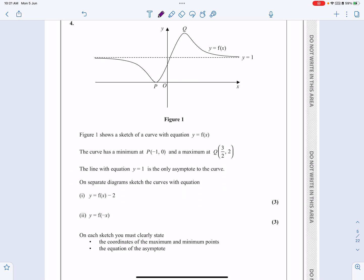We're going to be translating graphs and we're going to be using y equals f minus x in a moment, but let's just have a look at it. So it says figure 1 shows a sketch of the curve. We've got that there. It has a minimum point at minus 1, 0, and a maximum value at 3 over 2, 2. The line y equals 1 is an asymptote and it says on separate diagrams can we sketch these two other curves: y equals f(x) minus 2 and y equals f of minus x.